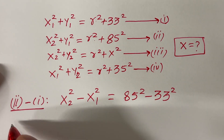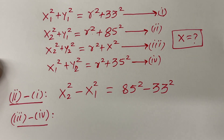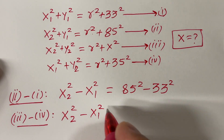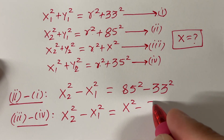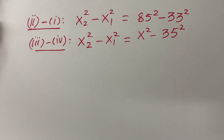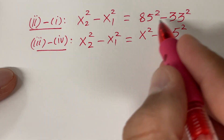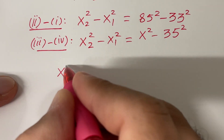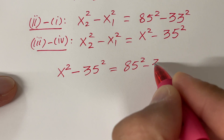Now subtracting equation 4 from equation 3: y2 cancels and r² cancels, giving x2² − x1² = x² − 35². Since the left-hand sides of both subtracted equations are the same, the right-hand sides must be equal. Therefore: x² − 35² = 85² − 33².